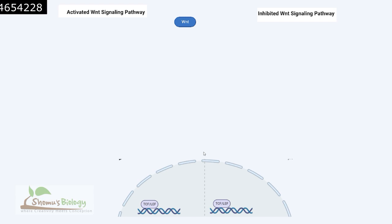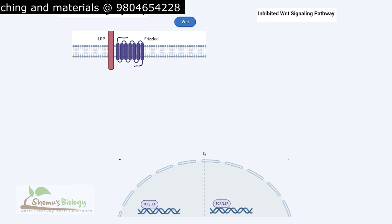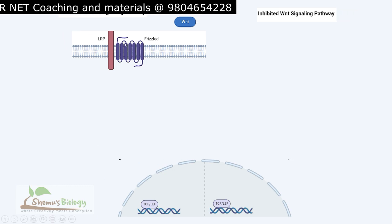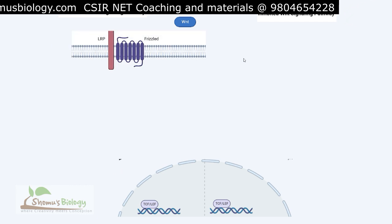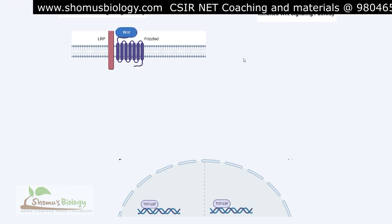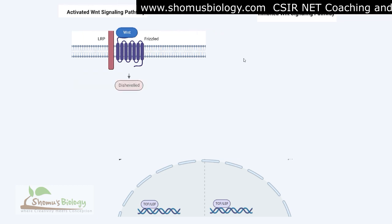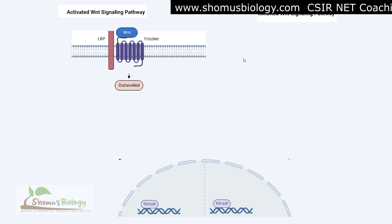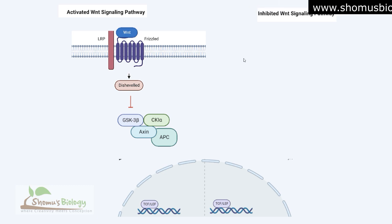First, let's look at the activated form. Once WNT is present, it allows dimerization of the membrane receptors Frizzled and LRP. WNT binds to Frizzled, and once that binding occurs, it activates a protein known as Disheveled. Disheveled is the inhibitor of a destruction complex formed by CKI-alpha, Axin, APC, and GSK3-beta.